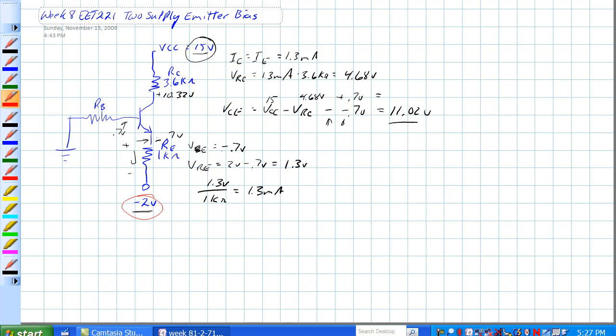Minus 0.7 volts at the emitter because this is zero. Zero volts minus 0.7 volt drop. So this is minus 0.7 volts there.